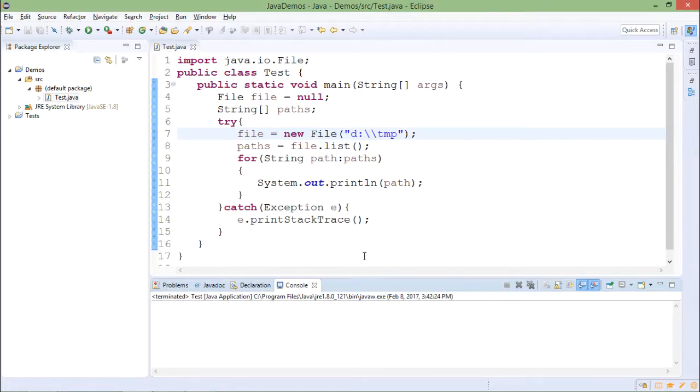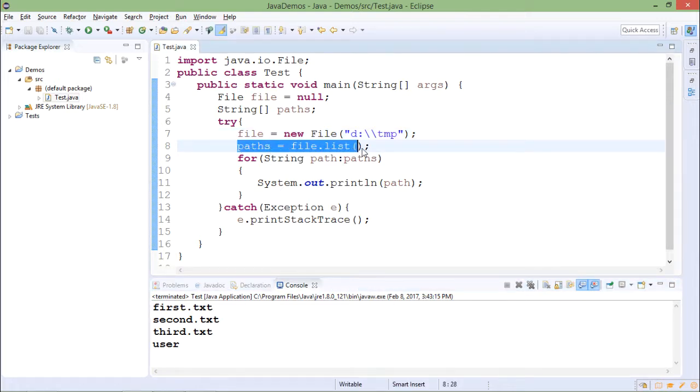Now if I want to read these values from program then I will run it and the method which is file.list, the list method is getting the list of subdirectories and files and putting that into this path string. The path string is printed in for each loop.